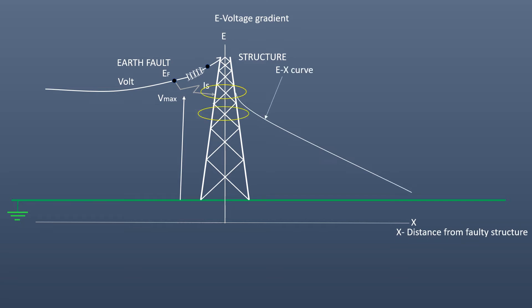A potential distribution along the axis of the structure occurs, keeping maximum potential at the fault point and gradually decreases toward earth. So, potential gradient, that is, difference in electrical potential across the distance or space at each point is developed during flow of fault current.